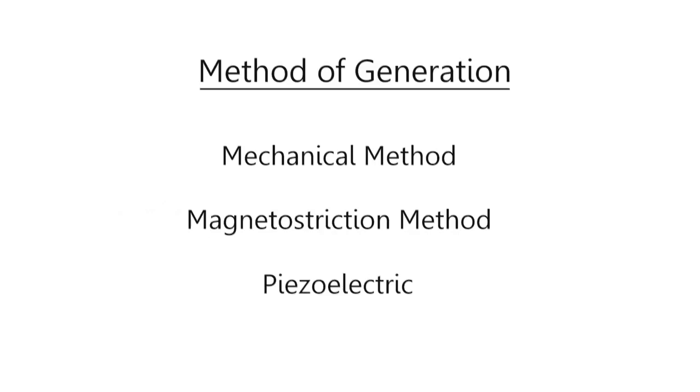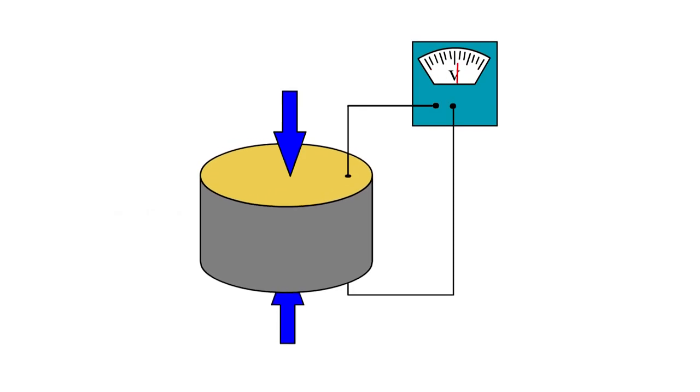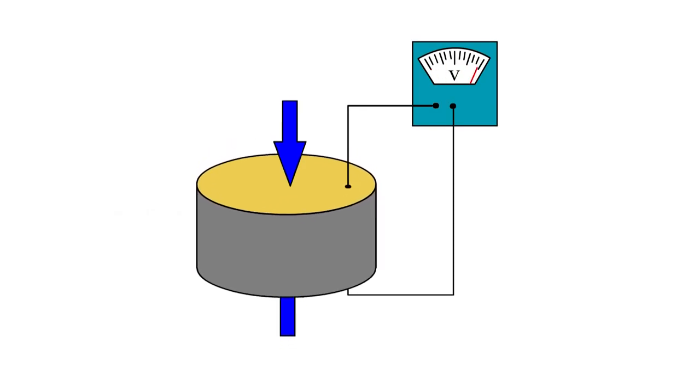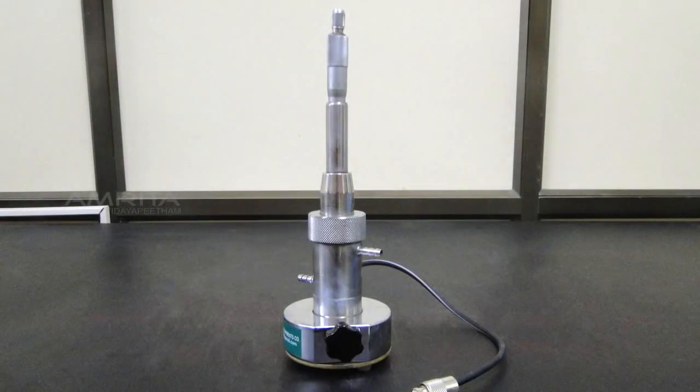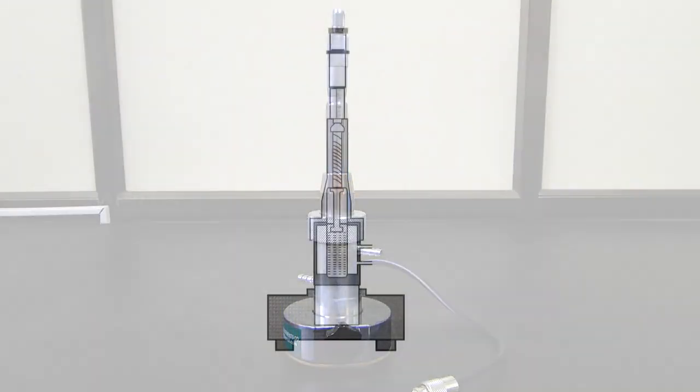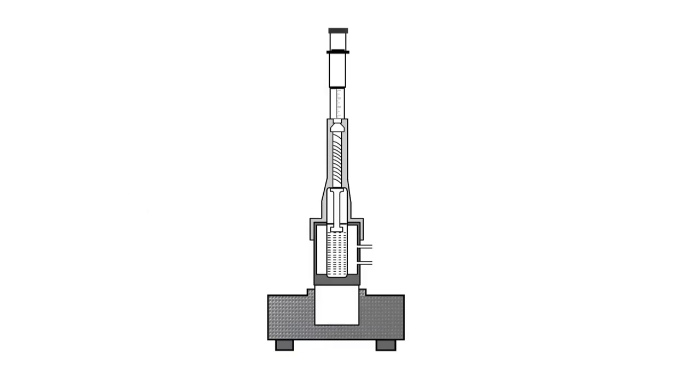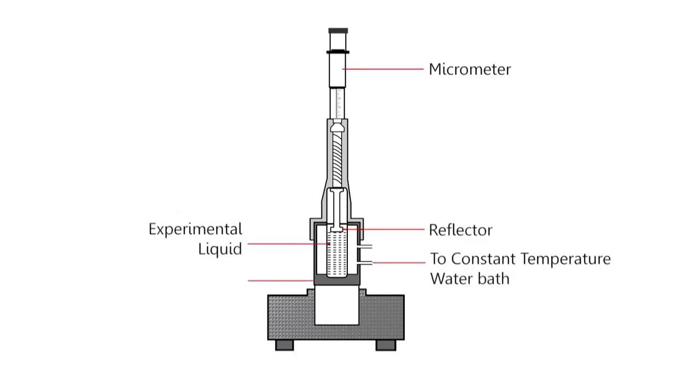In an ultrasonic interferometer, the ultrasonic waves are produced by the piezoelectric method. Ultrasonic waves of known frequency are produced by a quartz crystal that is fixed at the bottom of the ultrasonic cell. There is a movable metallic plate parallel to the quartz plate which reflects the waves. These waves superimpose and standing waves are produced in the liquid medium.